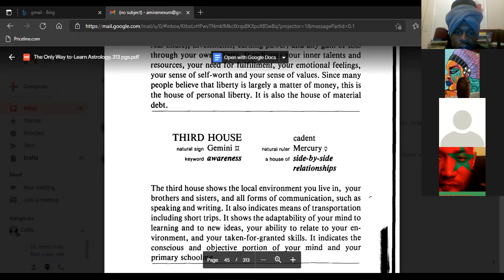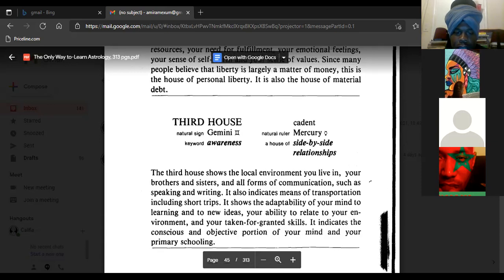Third house, natural sign Gemini, keyword awareness, cadent sign, natural ruler Mercury, a house of side-by-side relationships. The third house shows the local government you live in, your brothers and sisters, and all forms of communication such as speaking and writing. It also indicates means of transportation including short trips, the adaptability of your mind to learning and to new ideas.